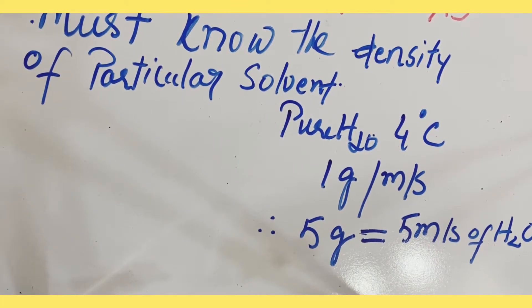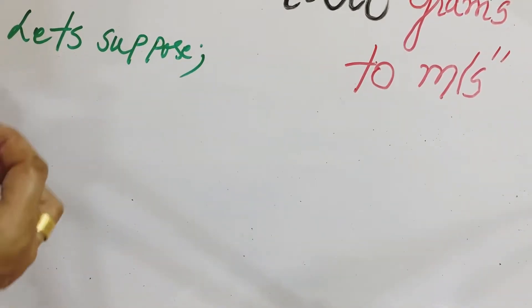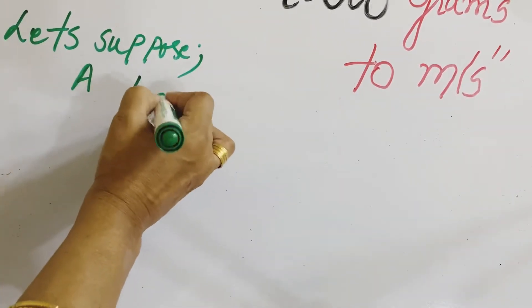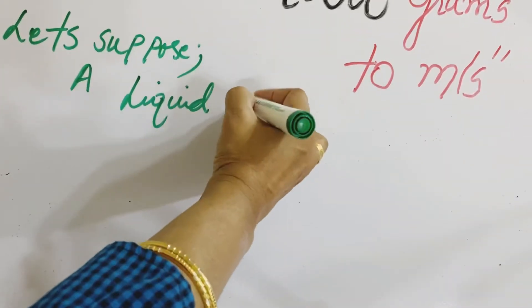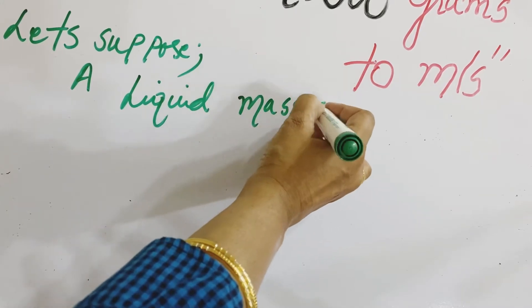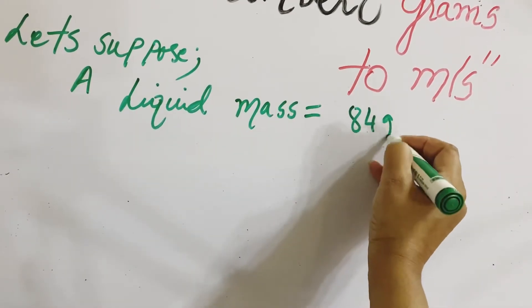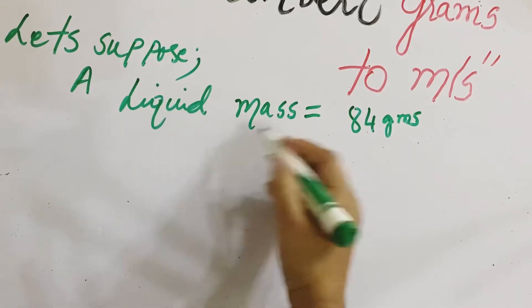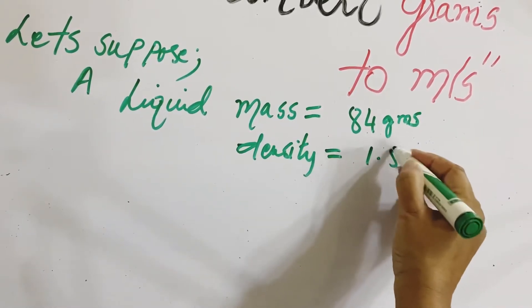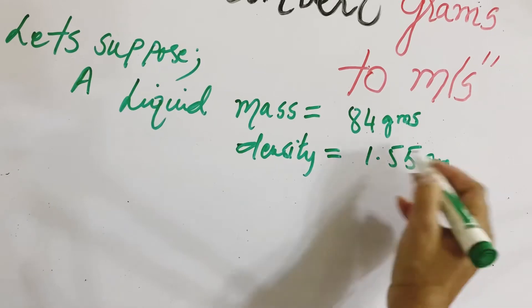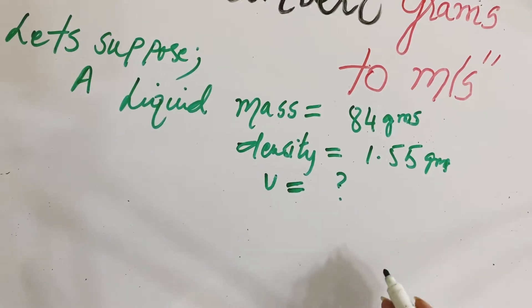Let's talk about other solvents and solve an example. Suppose a liquid or solvent XYZ has a mass equal to 84 grams, and its density equals 1.55 grams per ml. What would be its volume in milliliters? Let's work through this step by step.